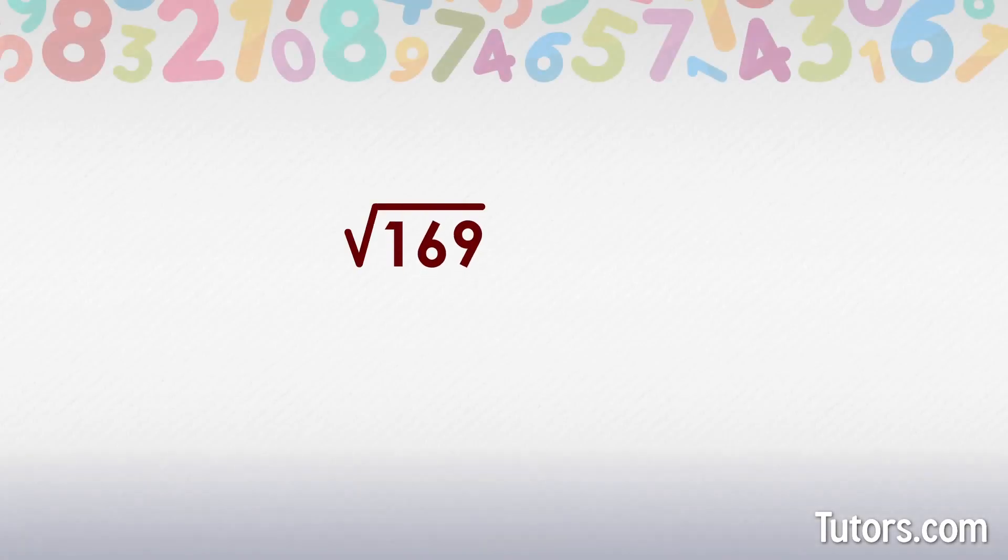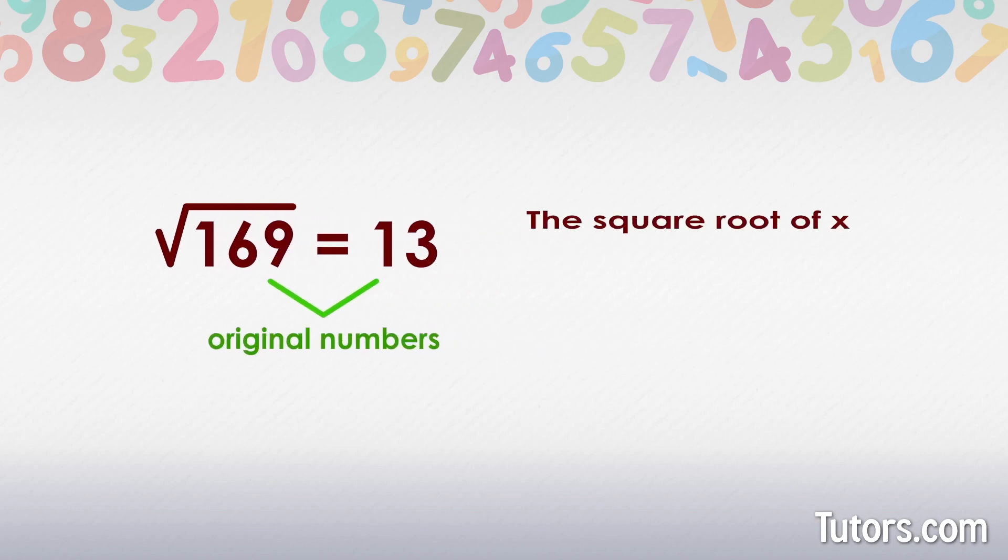The square root of 169 is 13. When solving a problem like this, we are finding the square root of the original number. The square root of x is a number, n, that satisfies this equation: x equals n squared.